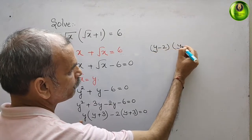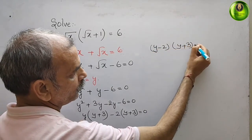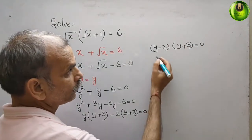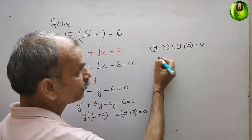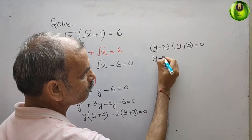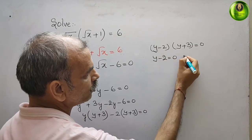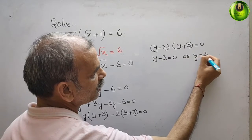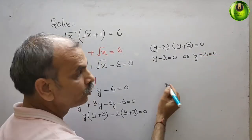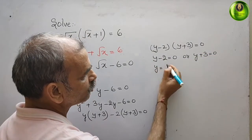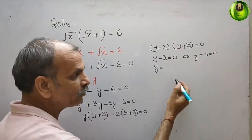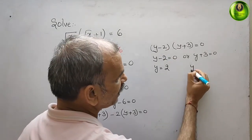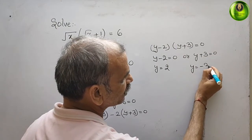The two factors give us: y - 2 = 0 or y + 3 = 0. Therefore y = 2 or y = -3.